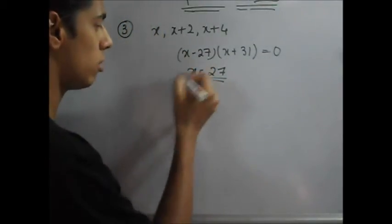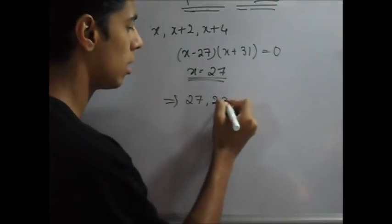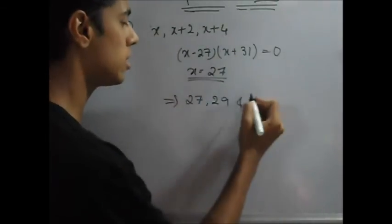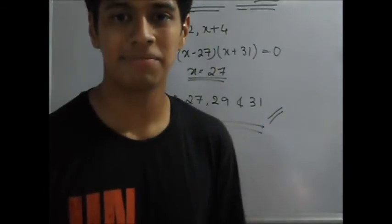So what are your 3 numbers? If x is equal to 27, then your 3 numbers will be 27, 27 plus 2 is 29, and 27 plus 4 is 31. These are your 3 odd numbers. Let's go on to the 4th problem.